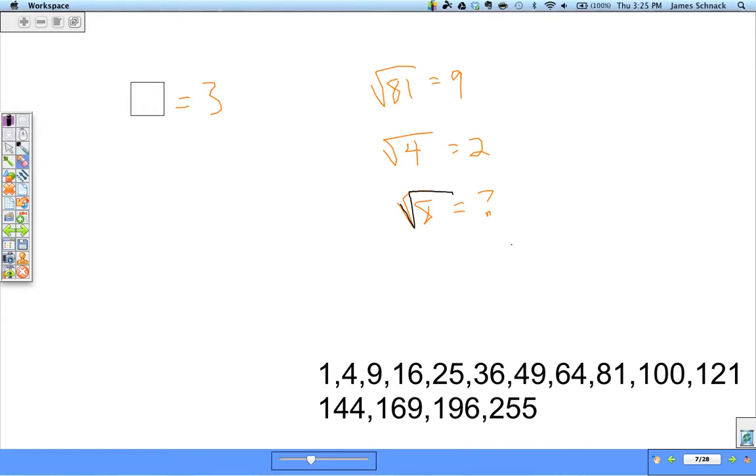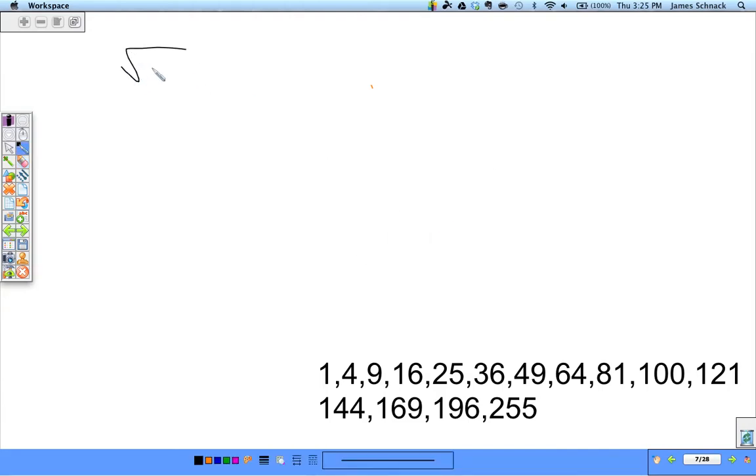Okay, this list of numbers that I typed out becomes very important. So, square root of 8. Can we write 8 as something times something, where one of those somethings comes from our list down here? And we can. It's 4 times 2. And what we can do with square roots now is we can break it into two pieces. Square root of 4 times square root of 2. And the square root of 4, well that is a nice number. 2 square root of 2.